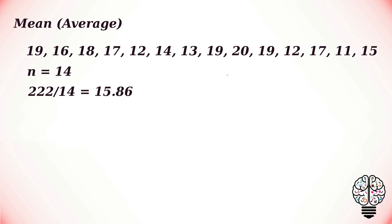This gives us 222. The total of the scores, 222, divided by the number of participants in the study, which is 14, gives us 15.86. So the mean is 15.86. The mean can be considered an accurate and sensitive measure of the average of a set of scores.